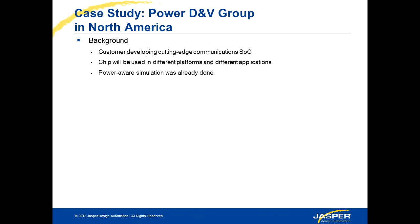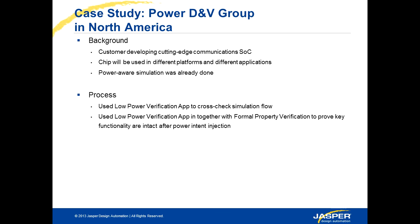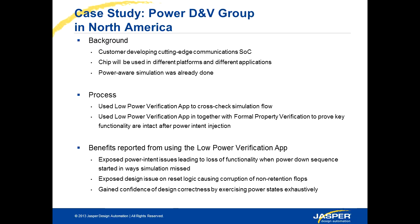If we take a look at one of our current customers for the Low Power Verification app, they were creating a communications device — a system-on-chip device — that was being used on different platforms by different applications. They had already run Power Aware Simulation, but because it was run late in the design cycle, they were concerned that it was incomplete and there could still be bugs there. So we used the Low Power Verification app first to make sure that we didn't miss any bugs from the simulation, and then to ensure it was in fact comprehensive and no design functionality was broken. We found, however, some new bugs — the Jasper formal technology exposed a few bugs that were due to power in that design.